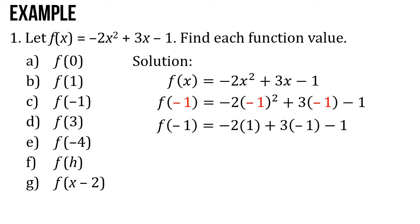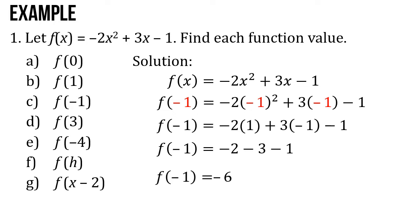Take note that the square of negative 1 is positive 1. So we're going to have f of negative 1 equals negative 2 minus 3 minus 1. f of negative 1 is equal to negative 1. And that's the function value for f of negative 1.